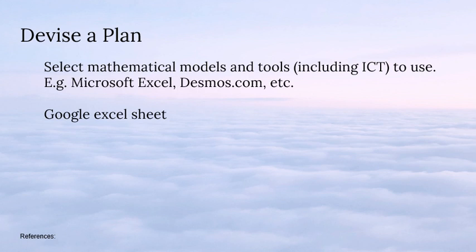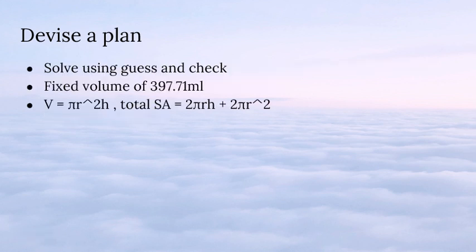The mathematical tools we use are Google Sheets and Excel. Next, we will devise the plan to solve the problem using our guess and check method. The fixed volume is 355ml, so our formula is: Volume = π r² h. Total Surface Area = 2πrh + 2πr².